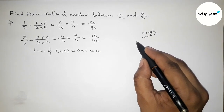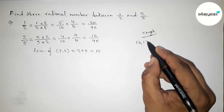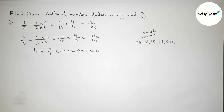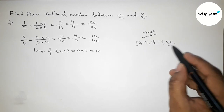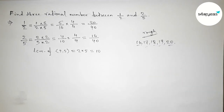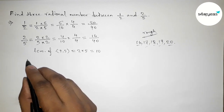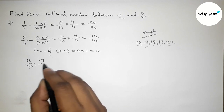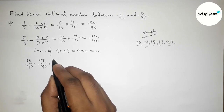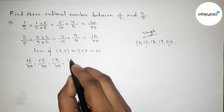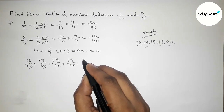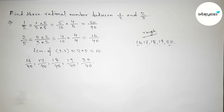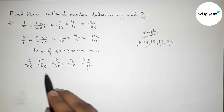Now between 16 and 20 we can get 3 integers: 17, 18, and 19. So between 16/40 and 20/40 we can find our 3 required rational numbers. Let's write them all down: 16/40, 17/40, 18/40, 19/40, and 20/40.